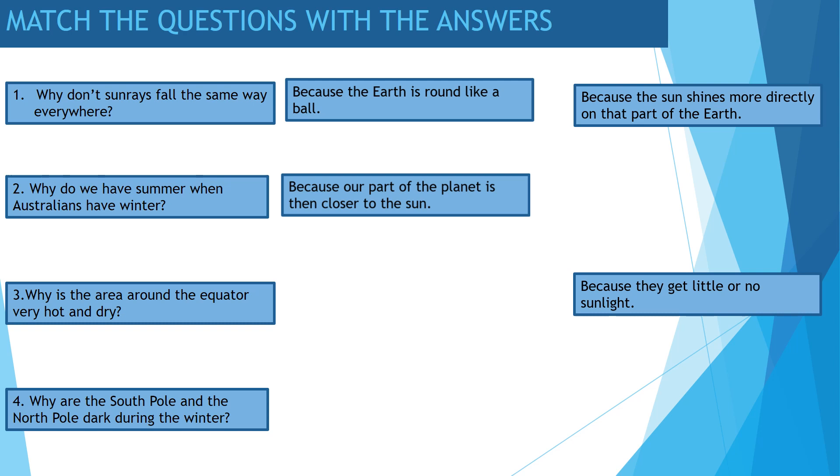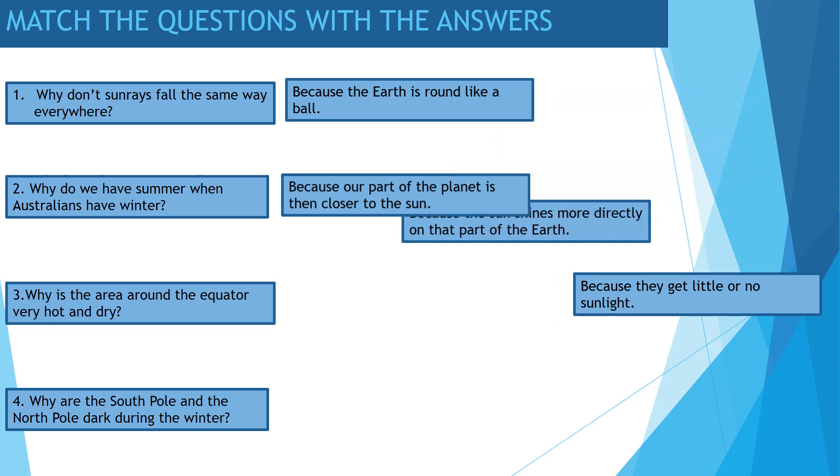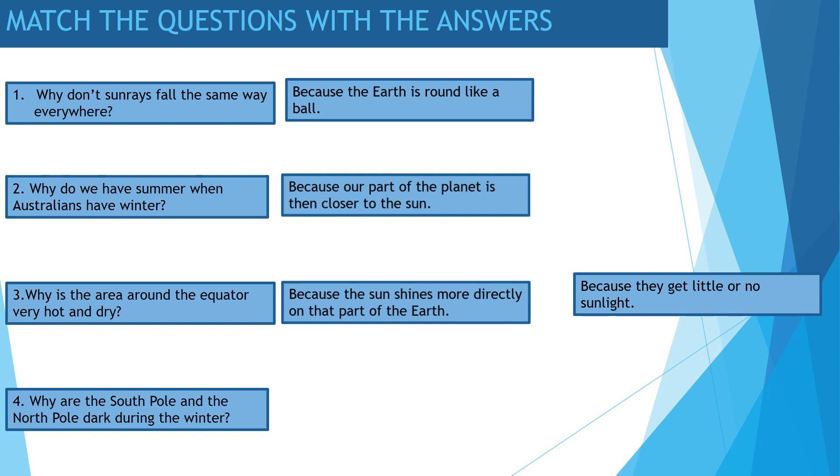Why is the area around the equator very hot and dry? Because the sun shines more directly on that part of the planet Earth.